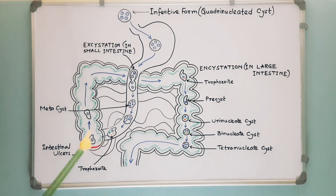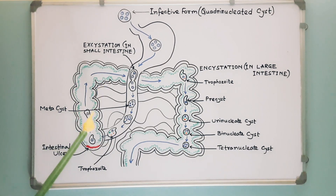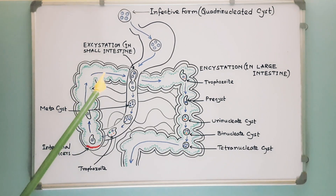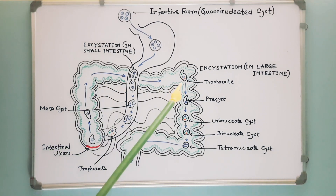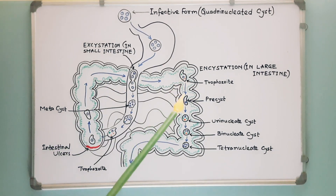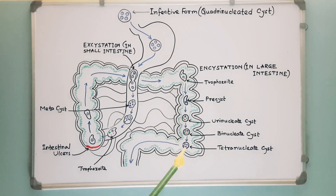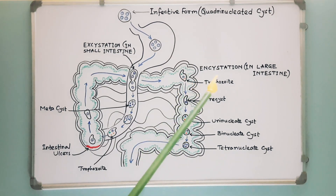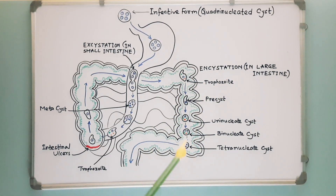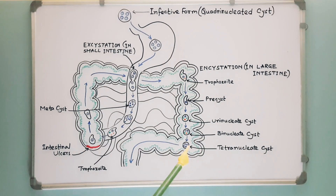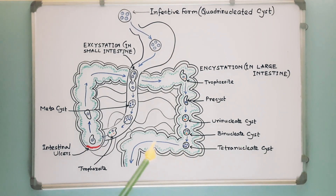After some days, when the intestinal lesion starts healing and the patient improves, the trophozoites transform into pre-cysts and then into quadrinucleated cysts. This process is called encystation, and it occurs only in the large gut. The quadrinucleated cysts are then liberated in feces.